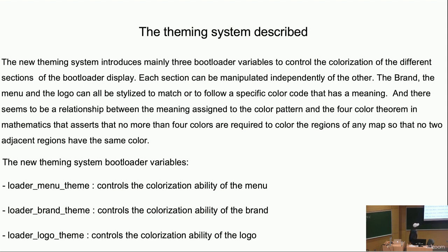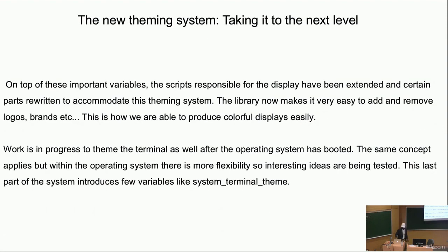These variables control each section independently, allowing you to color-code the display and assign specific meanings to those color codes. In doing so, we noticed an indirect relationship with the four-color theorem in mathematics, which states that no more than four colors are needed to colorize maps such that no two adjacent regions share the same color. This definition is a bit strict for our purposes, since we do sometimes want adjacent areas to share colors.